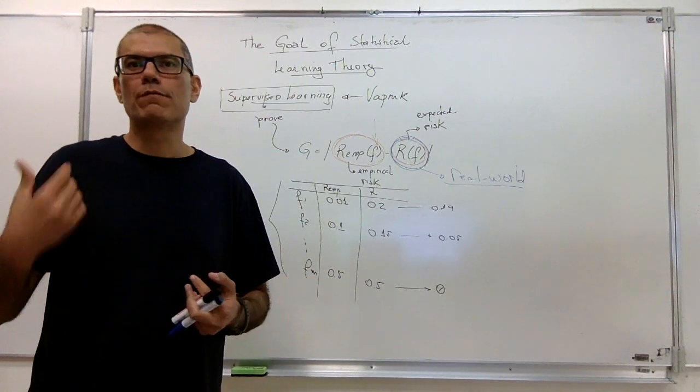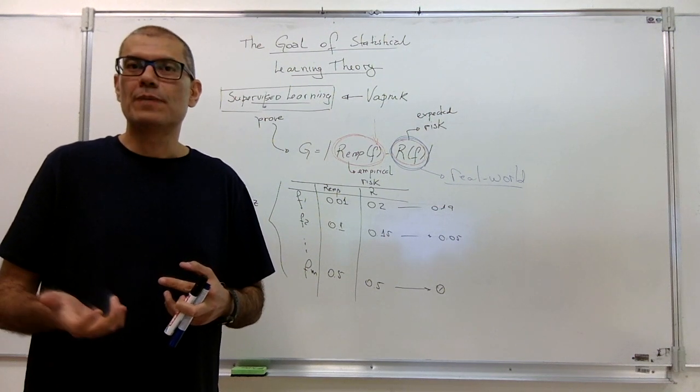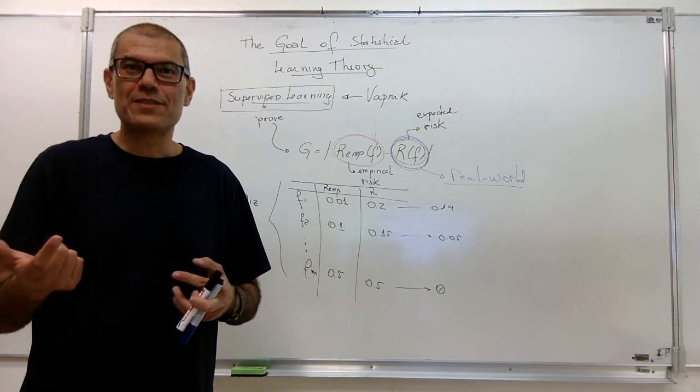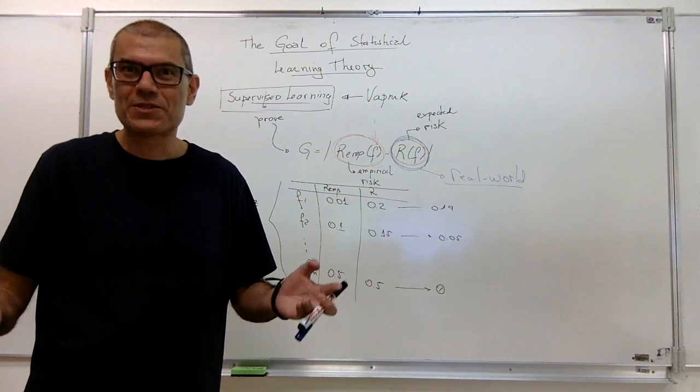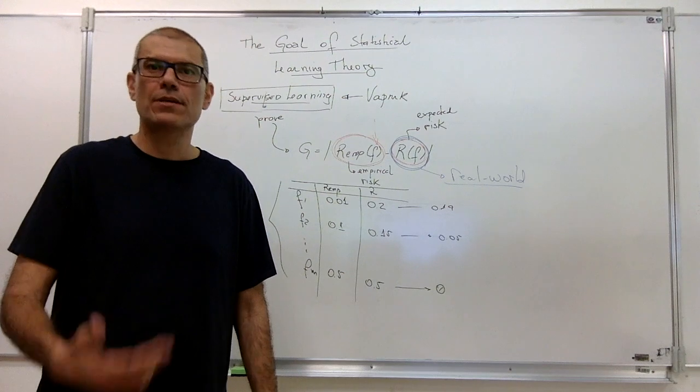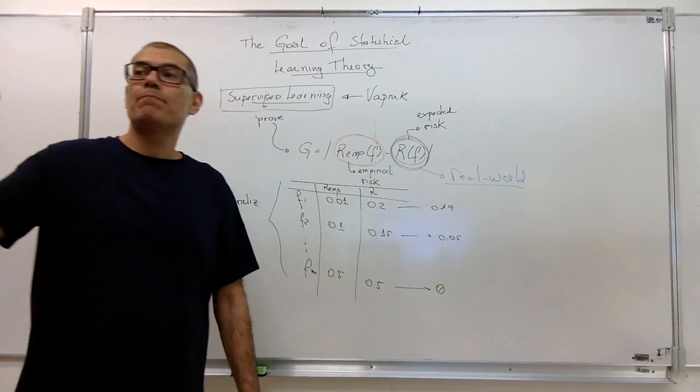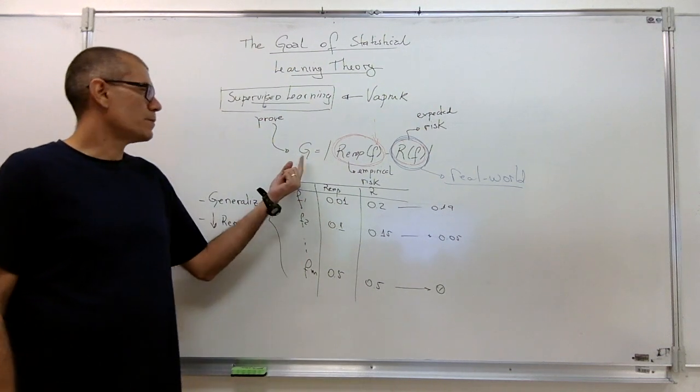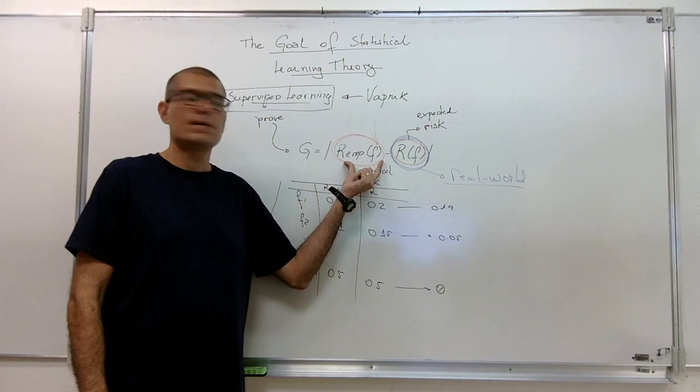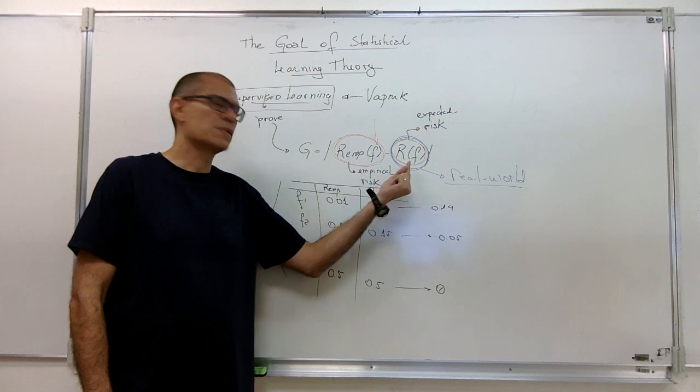But if we go to a real-world problem with several inputs, it could be just a single input, but that input could be real. And if it's on the real line, it's just impossible to have all possibilities. So it's just impossible to represent a real-world problem and compute the expected risk. And because of that, it is important to compute the generalization and ensure the empirical risk reduces. Because that could be a very good estimation for the expected risk.